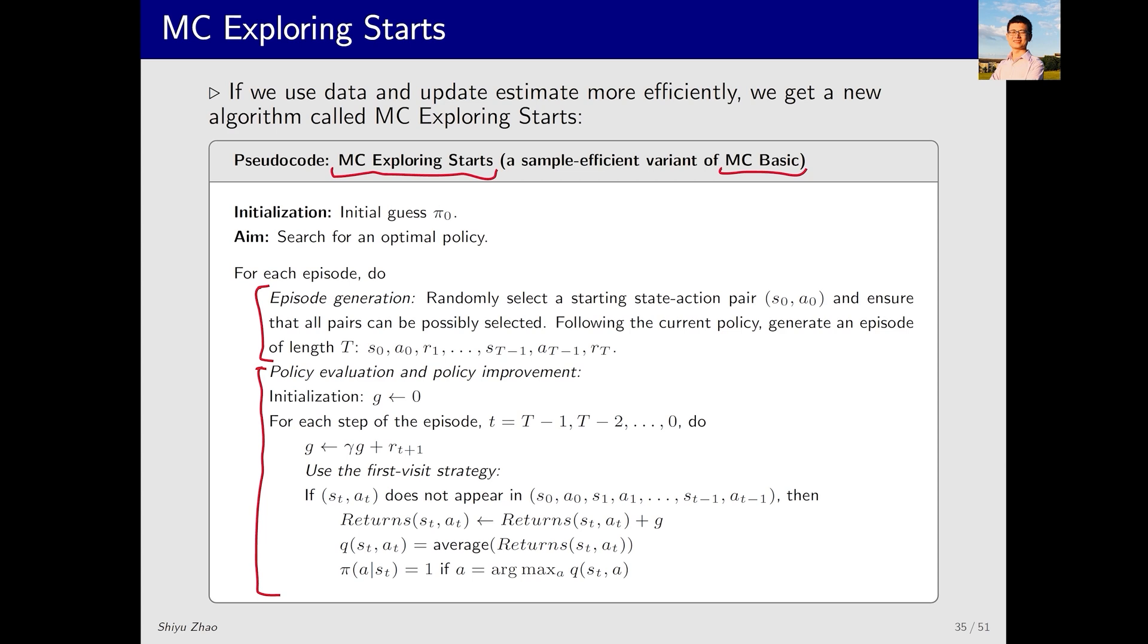Suppose we have an episode like this: S1A1 to S2A2, S3A3, S4A4, and so on. What would be the normal procedure to use the data? I would start with the first visit, which is S1A1, and go through all state-action pairs. The first one is this, and then I sum up all the subsequent rewards to get the return, which serves as an estimate for the action value of S1A1.